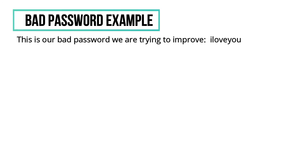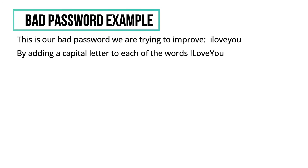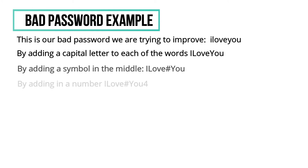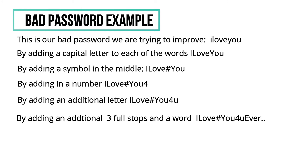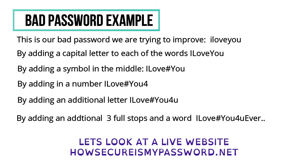So this is our bad password example - I'll show you how to apply these rules. By the second example, we've taken our bad password and applied some capital letters in the middle. We've added a symbol - it could be anything, a hashtag in this case. Then we can add a number, then add a letter on the end to make it stronger every time. Finally, you can add a couple of full stops on the end to make it even stronger.